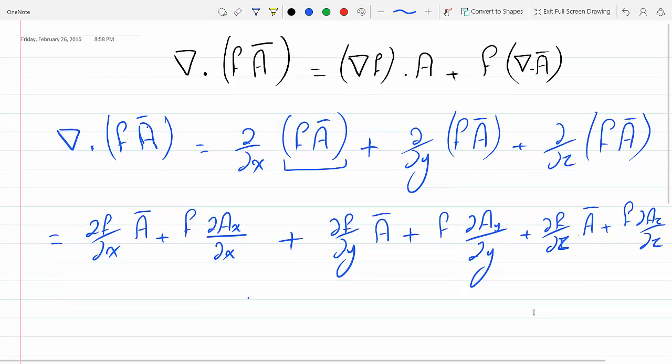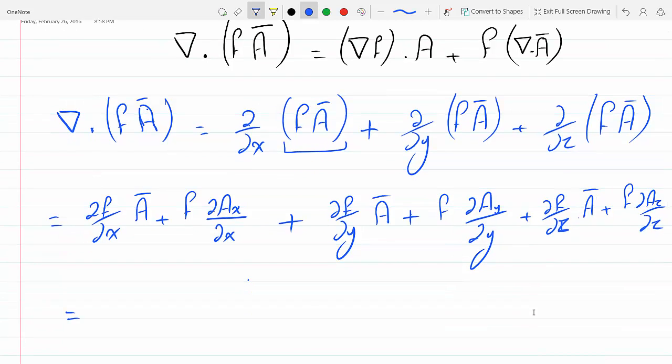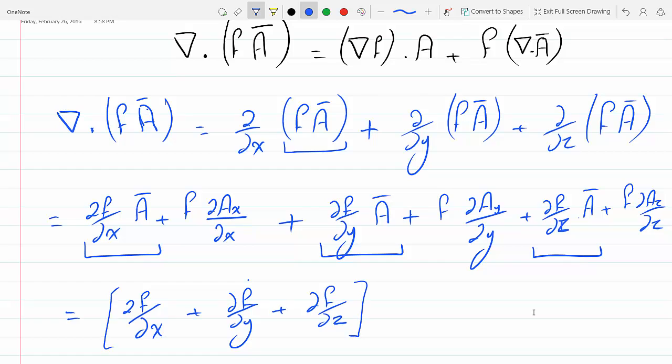Okay, now I know that this is nothing but I can collect these three here. And this is just df over dx plus df over dy plus df over dz, and this is all multiplied by A plus f.